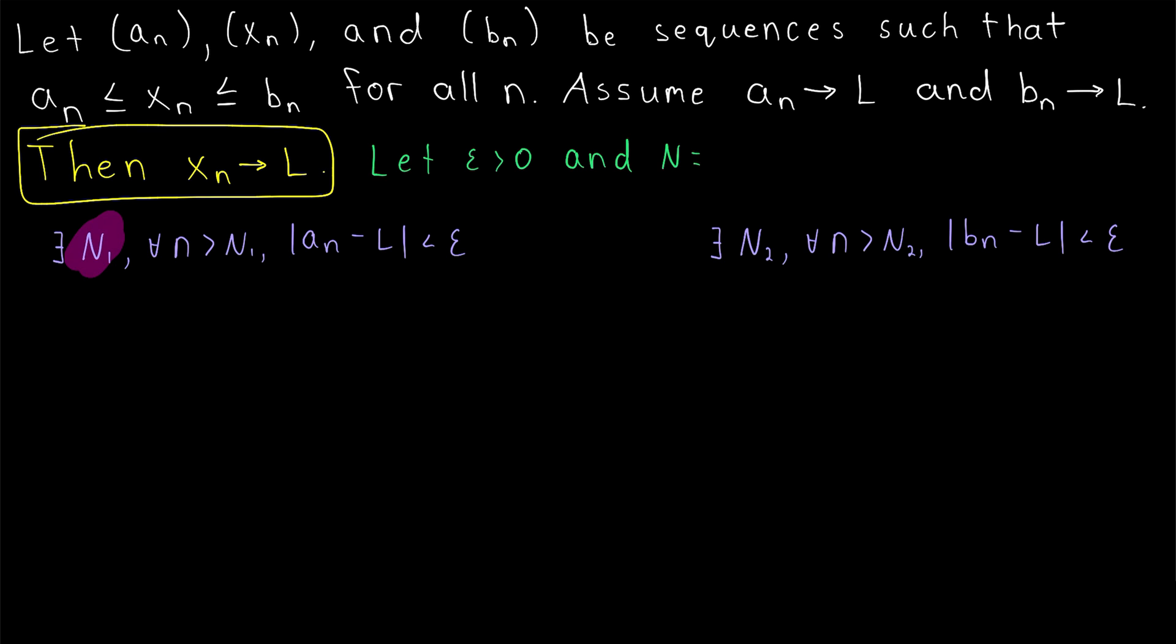Doing that guarantees us that there exists some number, say big N_1, so that for all n greater than big N_1, the absolute value of a_n minus L is less than epsilon.